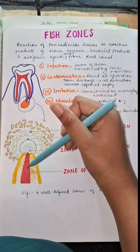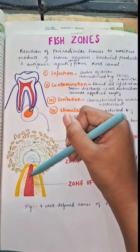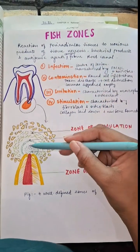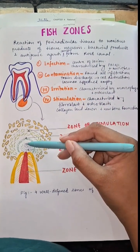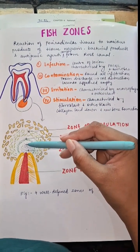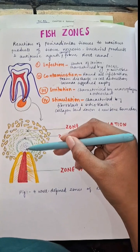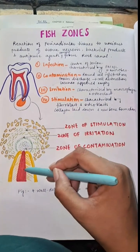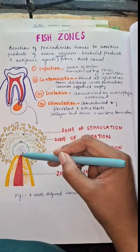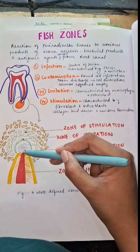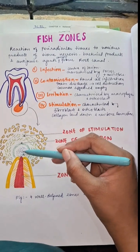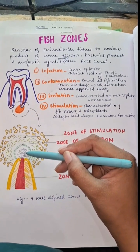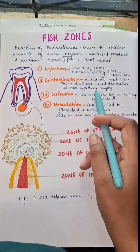One important thing to note is that microbes are only seen in this particular zone and nowhere else. Next to that is the zone of contamination, characterized by round cell infiltrate. Various toxins discharged from the zone of infection into this area cause cellular destruction, and as cells are destroyed, the lacunae in the bone will appear empty.